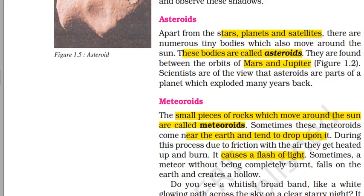What are meteoroids? The small pieces of rock which move around the sun are called meteoroids. Sometimes these meteoroids come near the surface of Earth and tend to drop upon it. During this process, due to friction with the air, they get heated and they burn. Mention in the comment box below which layer it is in which meteoroids burn.